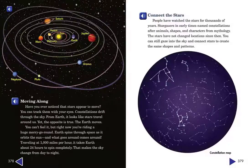You can't feel it, but right now you're riding a huge merry-go-round. Earth spins through space as it orbits the sun. And what goes around comes around. Traveling at 1,000 miles per hour, it takes Earth about 24 hours to spin completely. That makes the sky change from day to night.